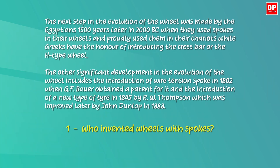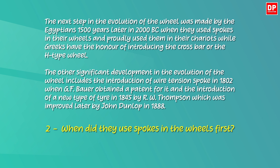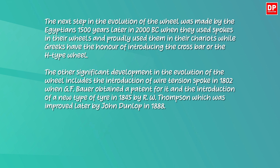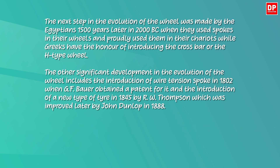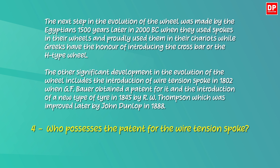Let's check your work now. The first question: who invented wheels with spokes? The answer is the Egyptians. The second one: when did they use spokes in the wheels first? The answer is 2000 BC — it's a year. The third one: when was the wire tension spoke introduced to the wheel? The answer is 1802. Look at the question word when, so this is also a year. The last question: who possesses the patent for the wire tension spoke? GF Bar is the name of the person who possesses the patent. Hope you could get it done correctly.